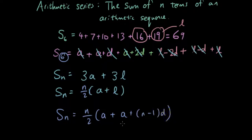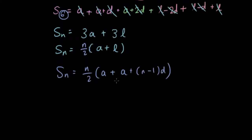And you can easily simplify this again. So I have n over 2 bracket 2a plus n minus 1d. And that is the final formula for figuring out the sum of n terms in an arithmetic sequence.